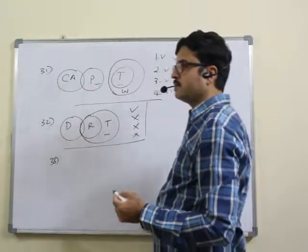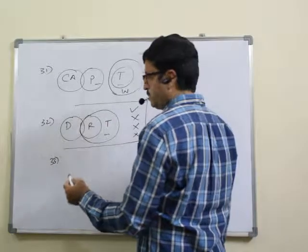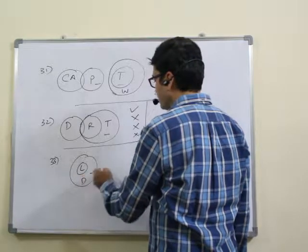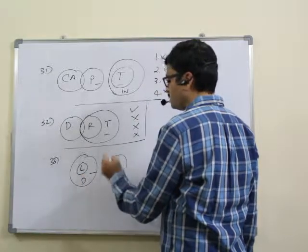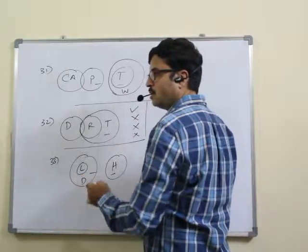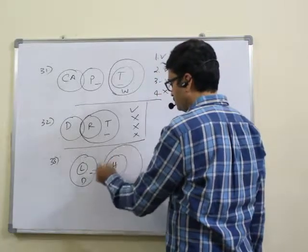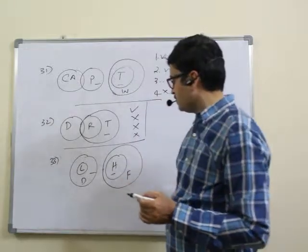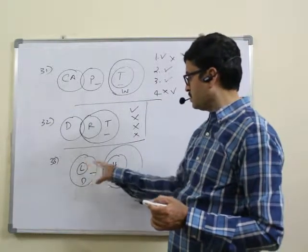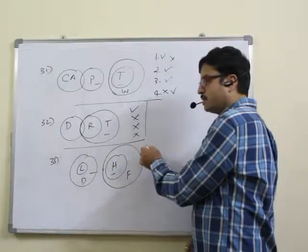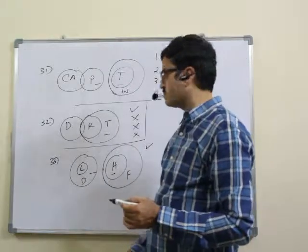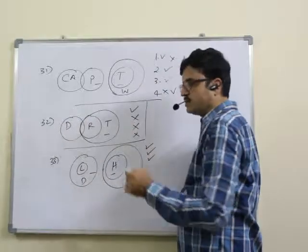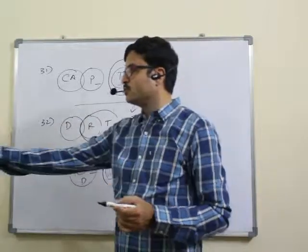Question 33: all lions are dogs, no ducks are horses, all horses are fruits. First: no lion is horse — valid. Second: some fruits are dogs — correct. Third: some ducks are lions — correct. Fourth one is wrong. So 33: one, two, three follow.